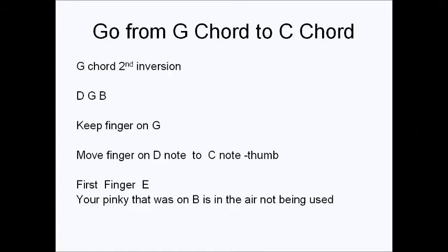Then go from G chord to C chord — same as before: start with D, G, B, keep your finger on G, move the finger that was on D to C, put your first finger on E, and the finger on B is no longer used. That's how you use chord inversions in the G, C, D chord progression. I'm going to make another video on how you do chord inversions in general. Hopefully you liked this video — give a thumbs up and subscribe to my channel.